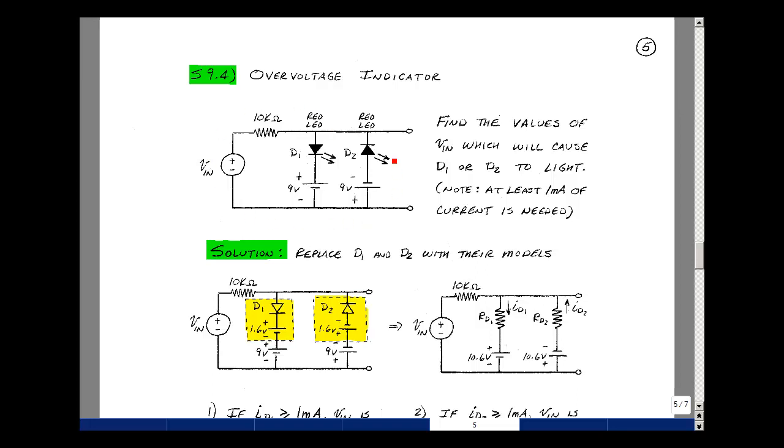The circuit shown below here is called an overvoltage indicator, where the input voltage can be positive or negative, and there's two LEDs in series with a 9 volt and a minus 9 volt source with respect to a common wire. Could you find the values of VN that would cause D1 and D2 to light if it takes at least a milliamp of current for the LEDs to show some visible light?